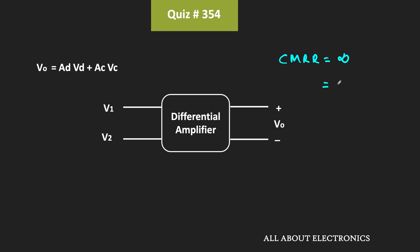For the ideal differential amplifier, the CMRR should be equal to infinite, because CMRR is the differential gain divided by the common mode gain. But for the actual differential amplifier, the common mode gain is non-zero — it also amplifies the common mode input signal by some amount — and therefore for the actual differential amplifier, the CMRR is finite.